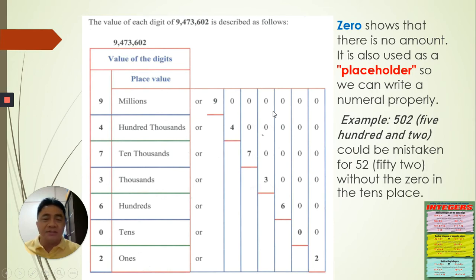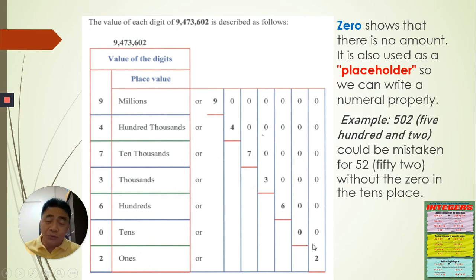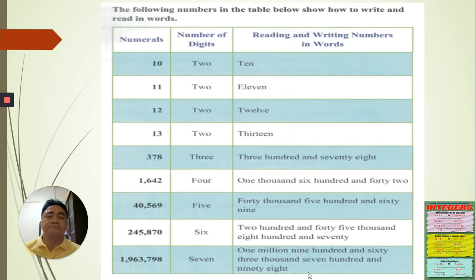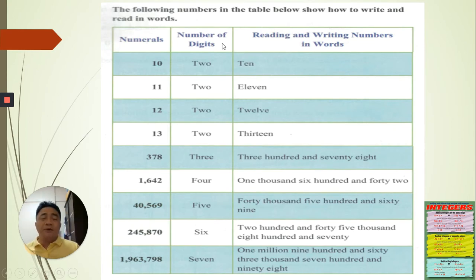For millions, there are six zeros. For hundred thousands, five zeros. Ten thousand has four zeros. Thousand has three. Hundred has two. Tens has one. And ones has none. Now, before we go to our activity, let us first look at how to read numbers.